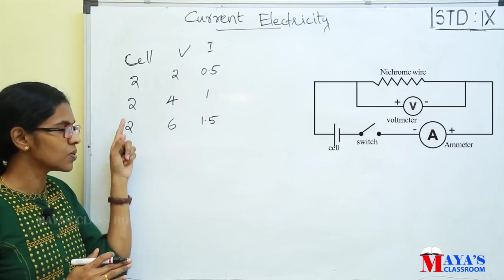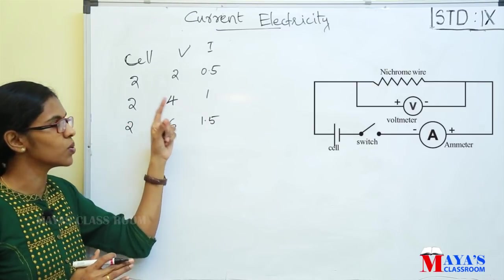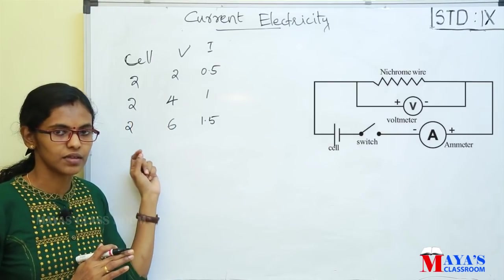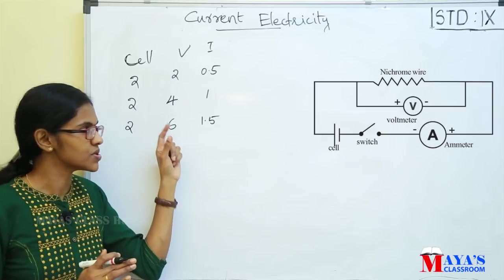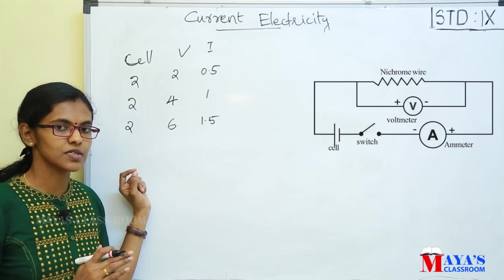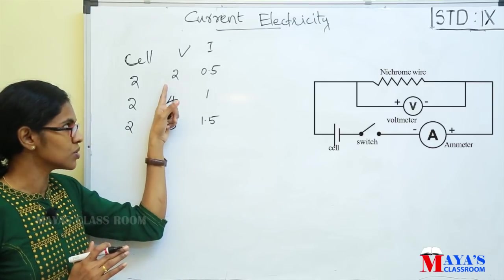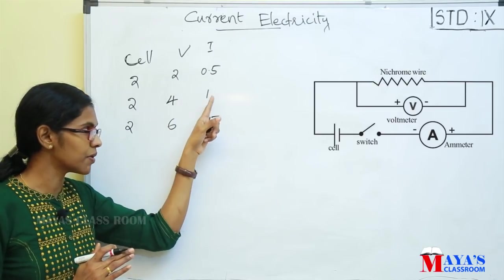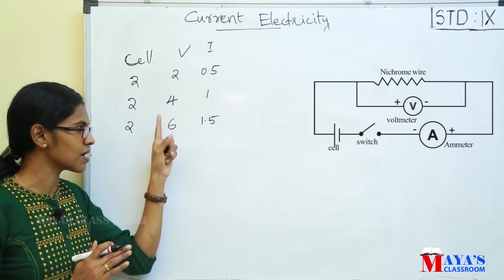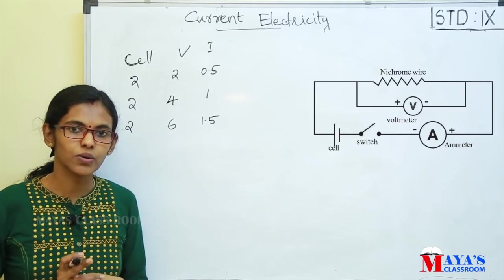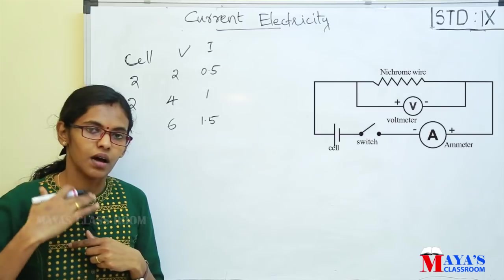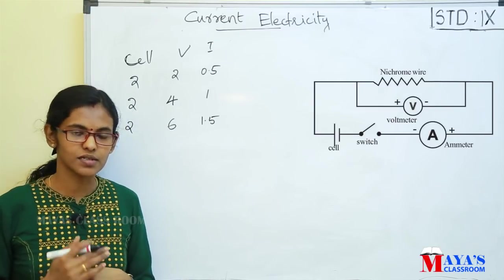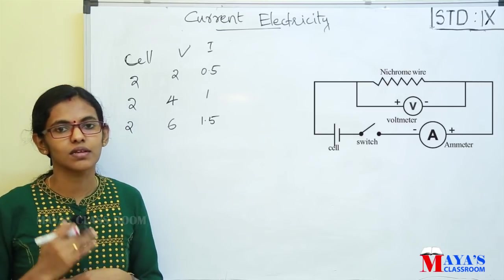If you want to increase the current in the circuit, you can increase the number of cells. The potential difference is the voltage. The current will increase — the value increases to 2.5 — as current increases with increasing voltage.